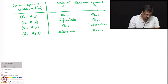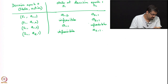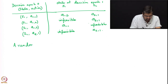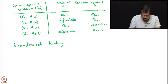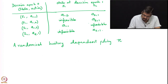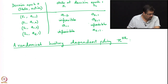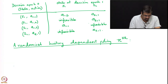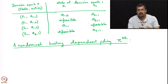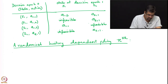Let us now look at a history-dependent randomized policy. Let us denote this by pi_hr. For this to be a randomized history-dependent policy, I need to tell you what probability distribution I am choosing over the set of actions at each decision epoch.